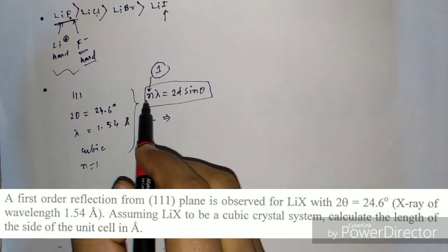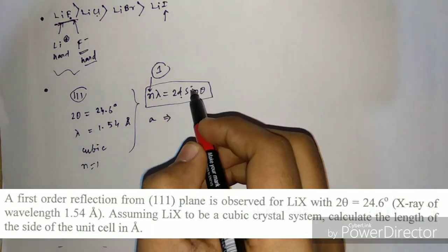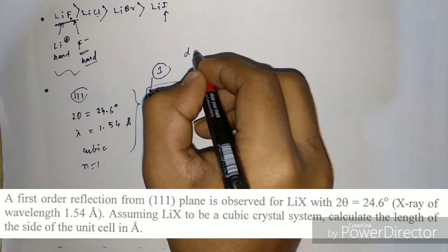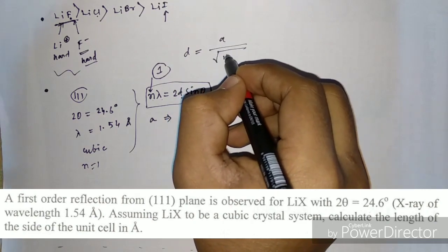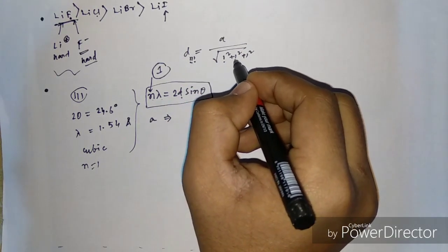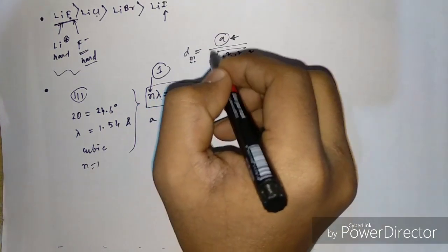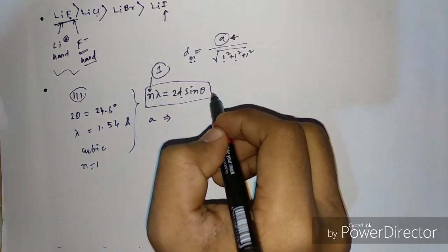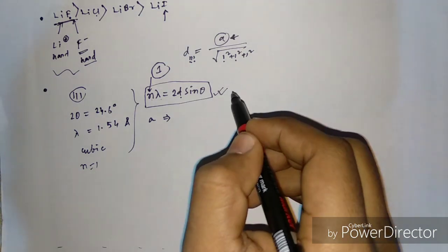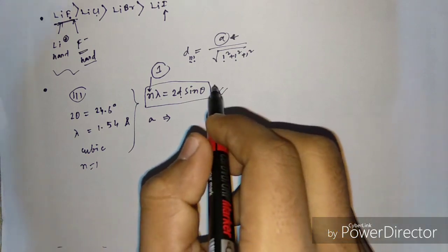After putting n, λ, and d for the (1,1,1) plane into Bragg's equation, where d(111) = a / √(1² + 1² + 1²), you can calculate d and then solve for a, the lattice parameter. If you want the complete solution, I will provide a PDF file on my blog — check the link in the description.